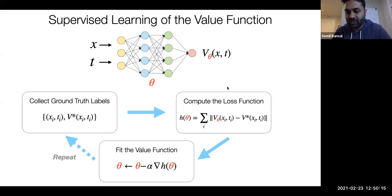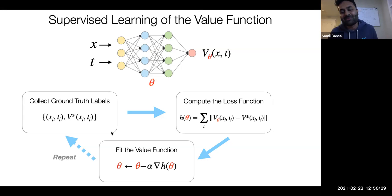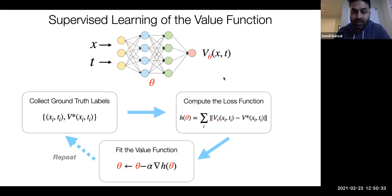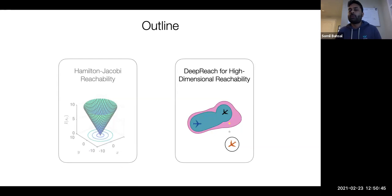The problem with supervised learning is: how do you get V-star in the first place? The whole problem I'm trying to solve is getting the value function for high-dimensional systems, so I can't compute that value function beforehand — it's a circular argument. We need a method that doesn't explicitly rely on supervision of the value function, and that's the problem DeepReach is aiming to solve.